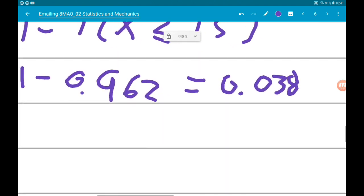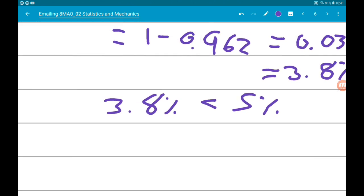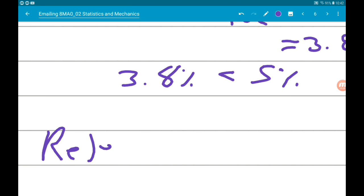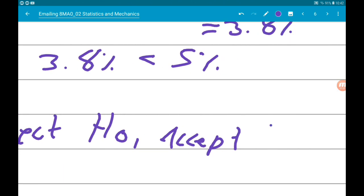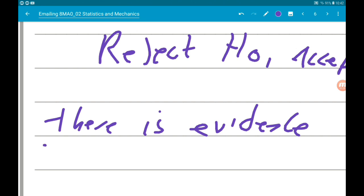Now 0.038 is 3.8%. Since 3.8% is less than 5%, we reject H₀. If the probability was one third, it's less than 5% likely he would win 16 or more games. So we reject H₀ and accept H₁. We should finish with a closing statement: there is evidence to support his claim.